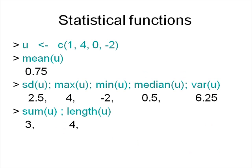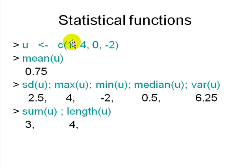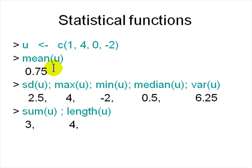R has many built-in functions: mean, standard deviation, maximum, minimum, median, variance, sum, and length. For vector u: sum is 3, length is 4, standard deviation is 2.5, max is 4, min is -2, median is 0.5, variance is 6.25, and mean is 0.75.